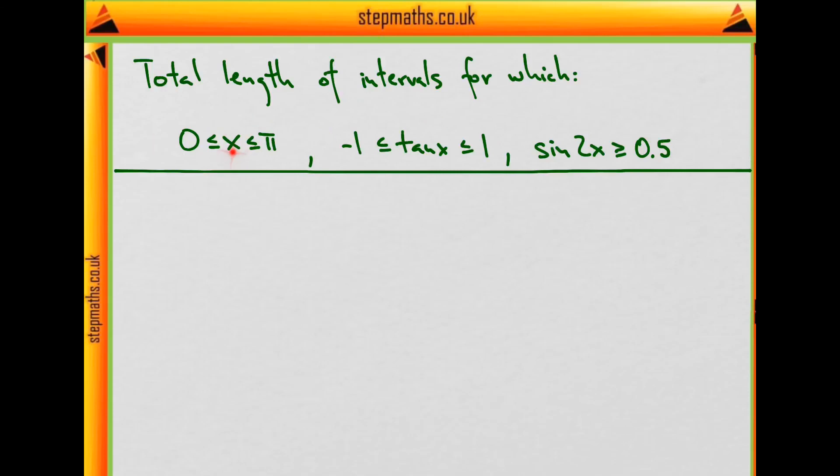First of all, x needs to be between 0 and π, tan of x between negative 1 and 1, and sin of 2x must be greater or equal to 1 half. Now, two of these inequalities involve trigonometric functions, so it would be a good idea to try and draw the two graphs of the two functions to help us understand what's going on. You can stop the video now and give it a go yourself.